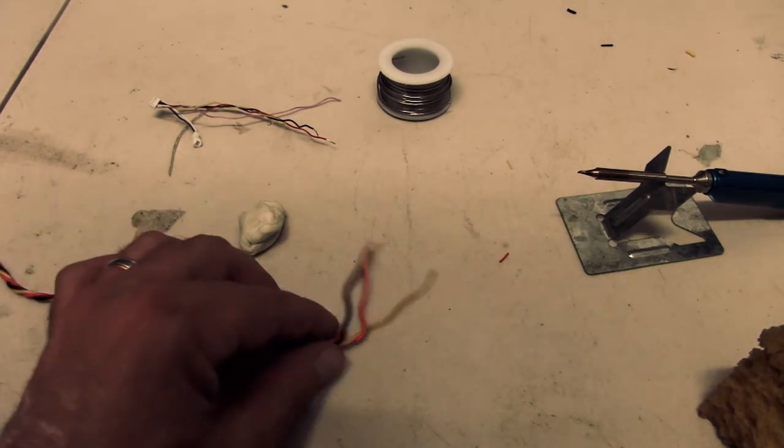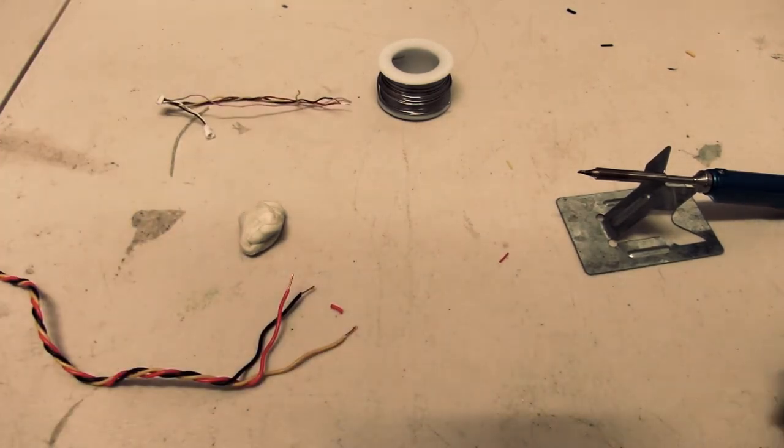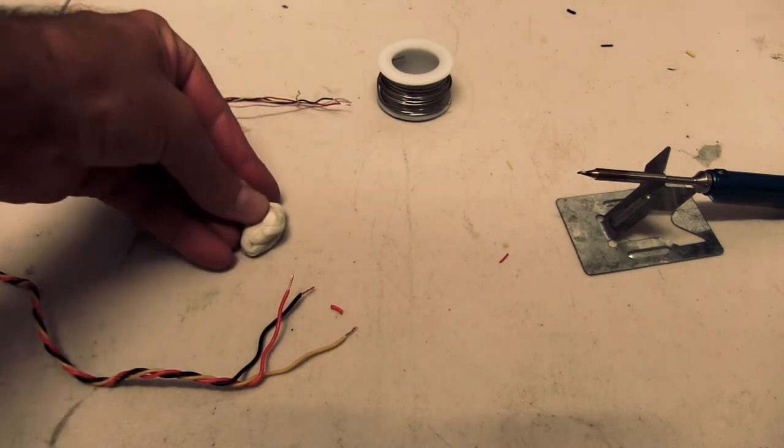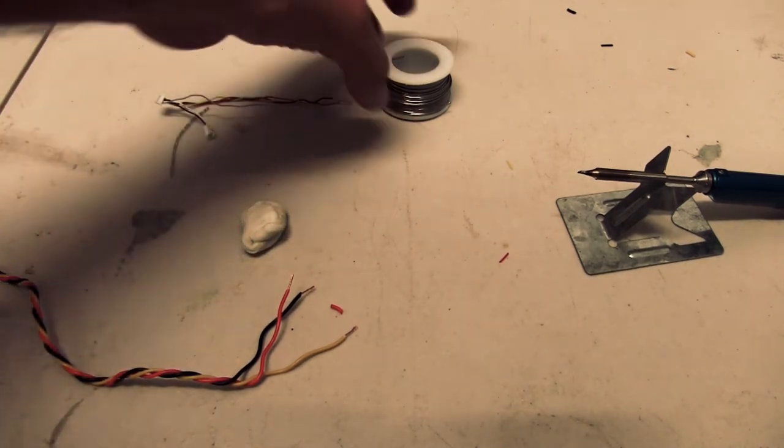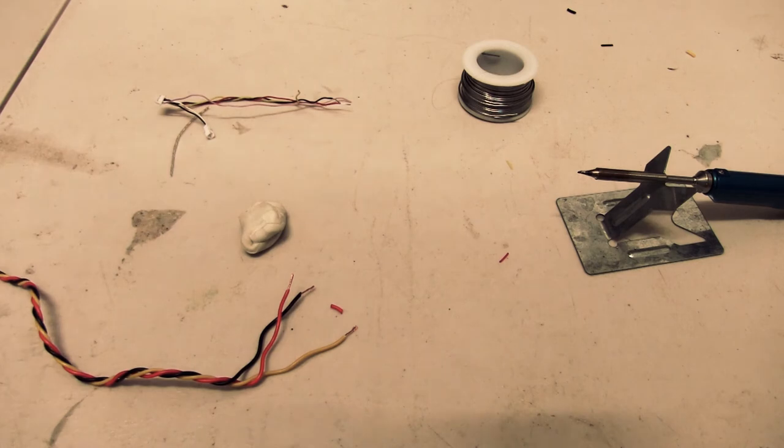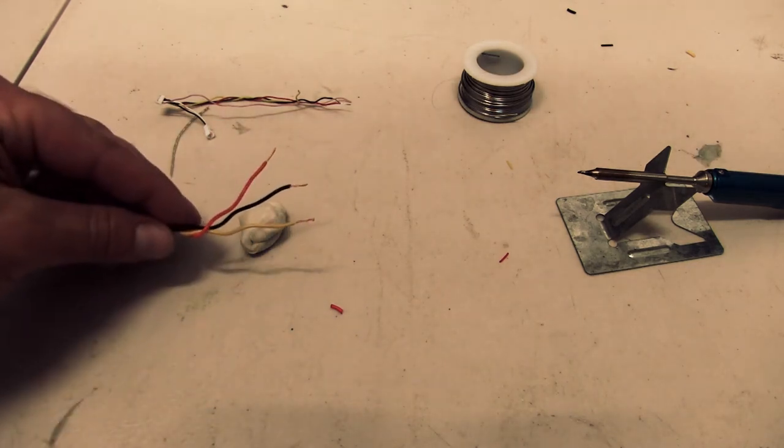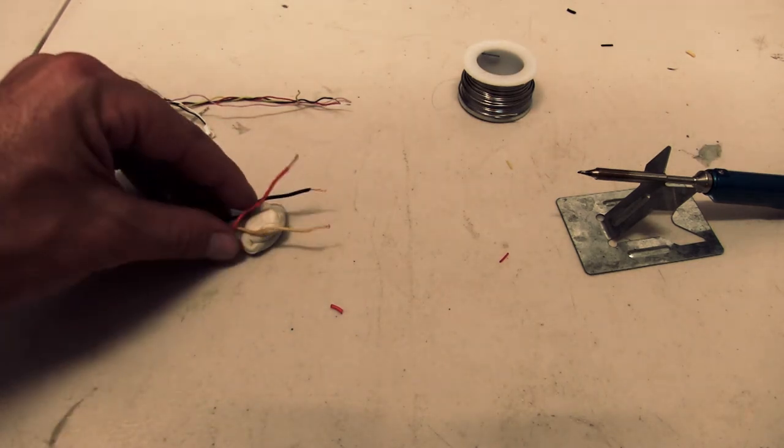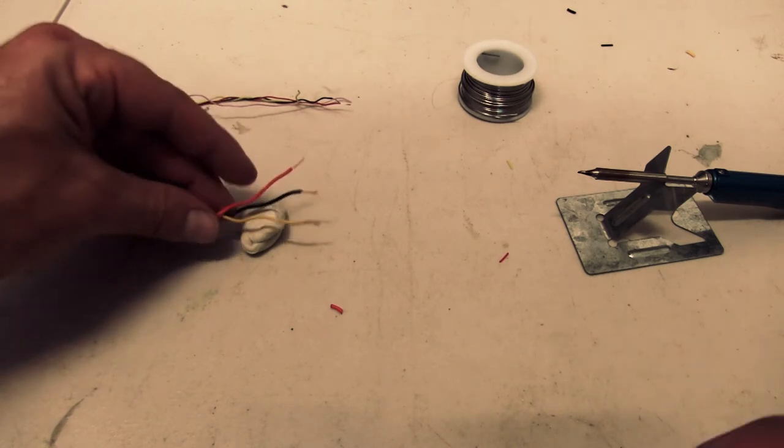Alright now for the fun bit. So I've got my soldering iron here, I've got my blob of blue tack and my solder. So we're going to solder this up now, we'll tin up the ends of the six loose ends here and we'll connect it up together and heat shrink it.